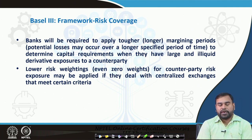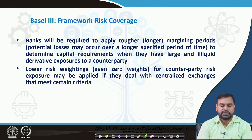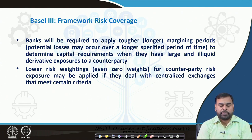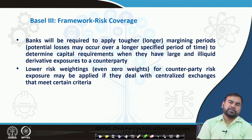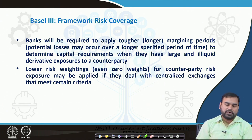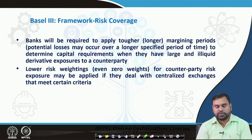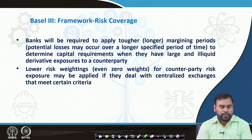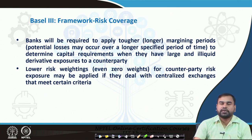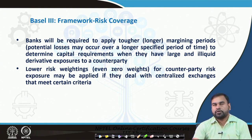Banks will be required to apply tougher margining periods to determine capital requirements whenever they have large and illiquid derivative exposure to a counterparty. Lower risk weighting for counterparty risk exposure may be applied if they deal with centralized exchanges that meet certain criteria. If any company is doing business in the foreign exchange sector, it is required to capture how those particular losses due to fluctuations in the capital base can be managed. This is the way the framework has been designed, though Basel 3 has mostly highlighted the capital part rather than the risk part.